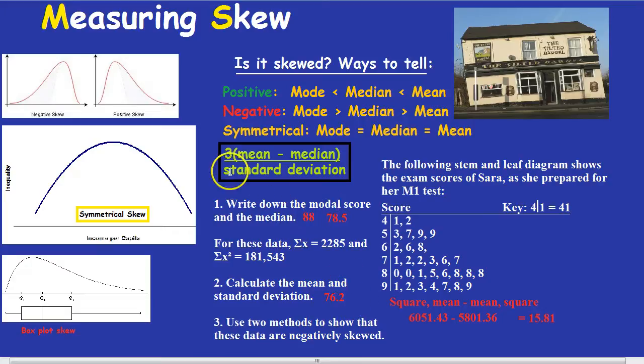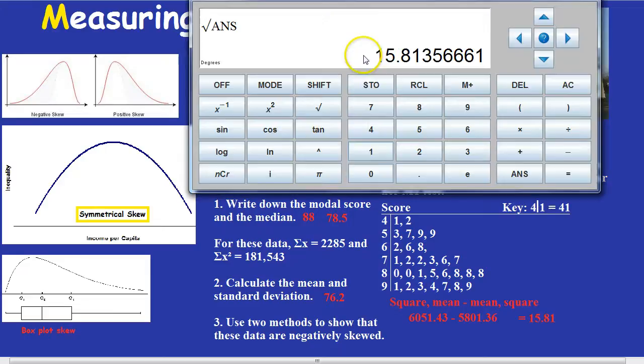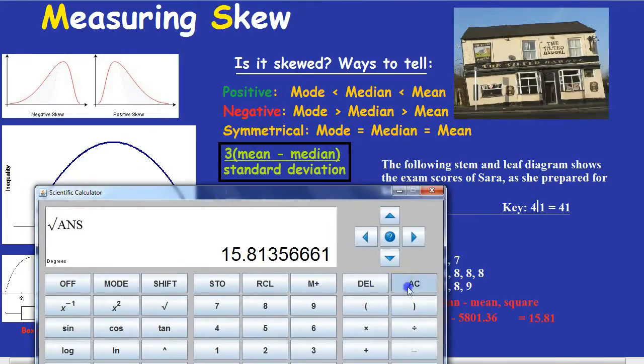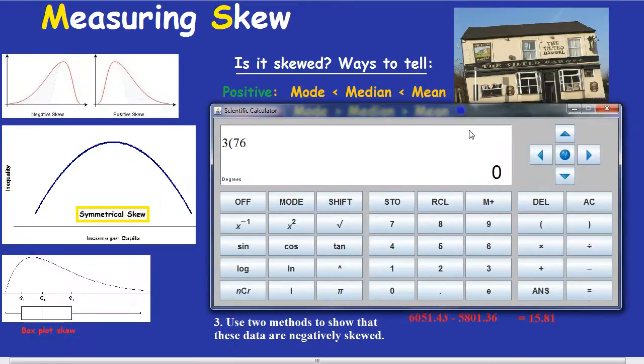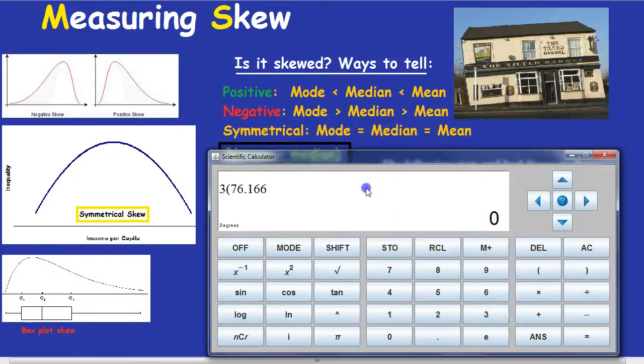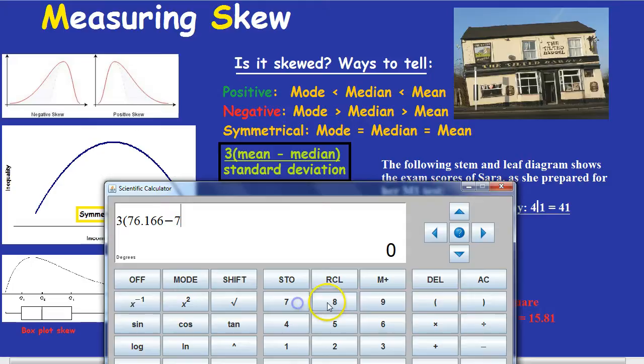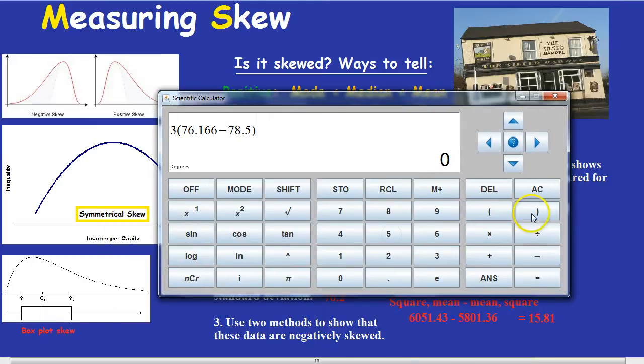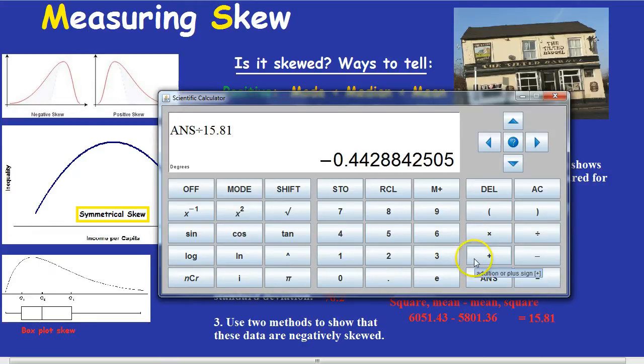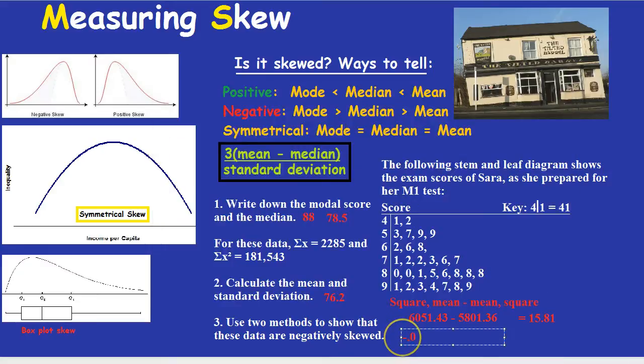And the second demonstration was this more complicated method. Three times mean takeaway median divided by standard deviation, which we're about to do right now. Now, isn't this amazing? Three times the mean, which is, I remember, 76.16. Take away the median, which was 78.5. Jumping around a bit here. All of that divided by the standard deviation, which was 15.81. And notice we're getting a number between minus 1 and 1, minus 0.44. Which doesn't take a genius to know is a negative number, demonstrating negative skew.